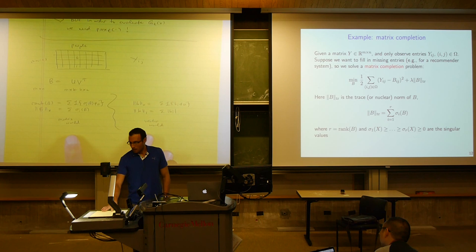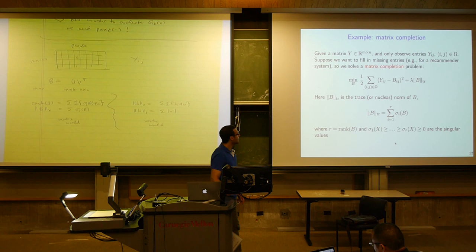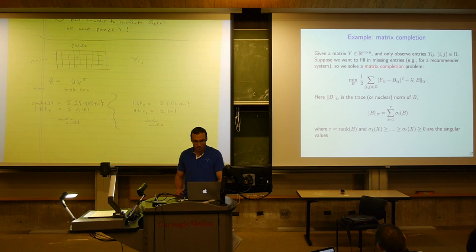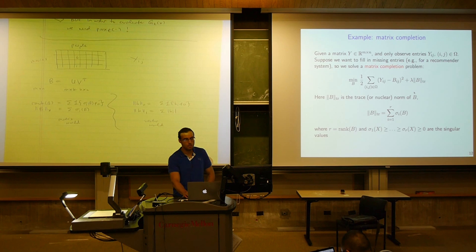So we're trying to find a matrix that's low rank and approximates what we've seen well on the observed set. This problem is convex because the squared error term is a quadratic and the trace norm is a proper norm. Before people started using proximal gradient, problems like this were pretty hard — this is a semidefinite program, which we used to solve with interior point methods, which are very slow at this scale.